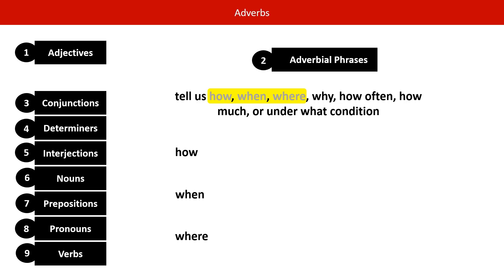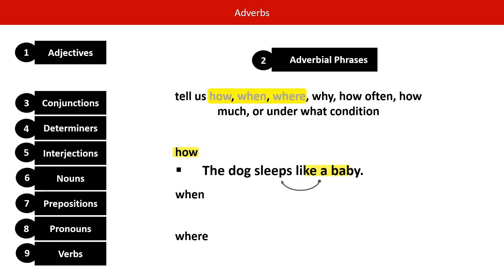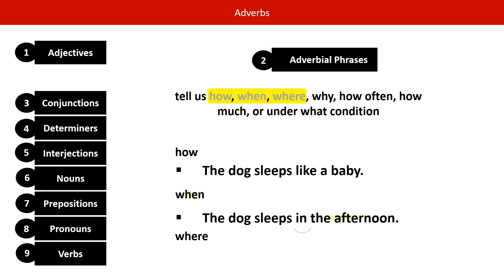Again, starting with how: the dog sleeps like a baby. Like a baby is our adverb — it's an adverbial phrase that modifies sleeps and tells us how. Next, when: the dog sleeps in the afternoon. In the afternoon is the adverbial phrase and it modifies sleeps to tell us when.